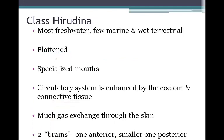The second class is made up of mostly freshwater, marine, and wet terrestrial leeches. They have flattened bodies with specialized mouths. The circulatory system is enhanced by the coelom and connective tissue, and a lot of gas exchange occurs through the skin. These leeches actually have two brains — two sets of ganglia — one anterior and one smaller posterior.